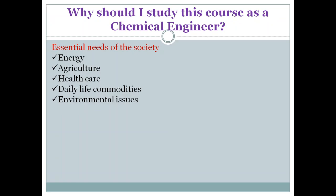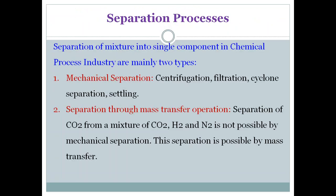Today we will try to understand another question: how will you separate the molecules through mass transfer? Separation of a mixture into single components in the chemical process industry is mainly of two types. The first type is mechanical separation — centrifugation, filtration, cyclone separation, and settling — which you have already studied.